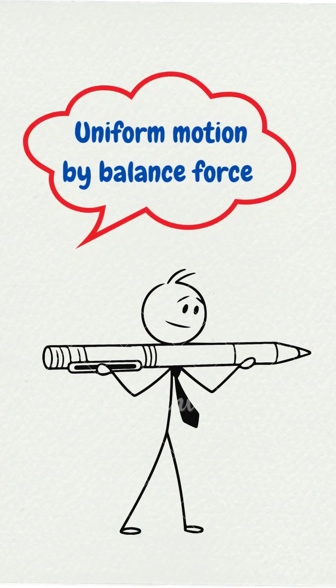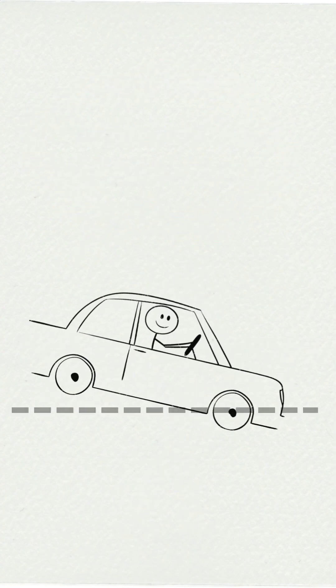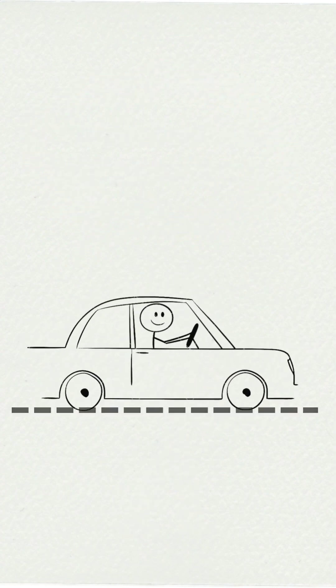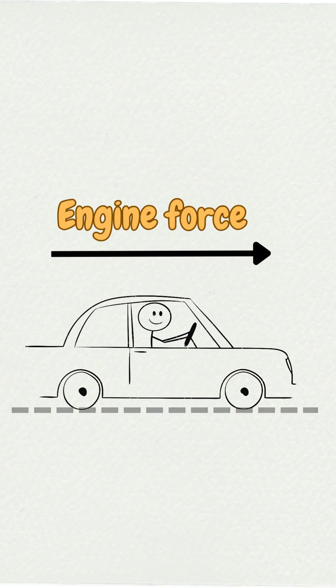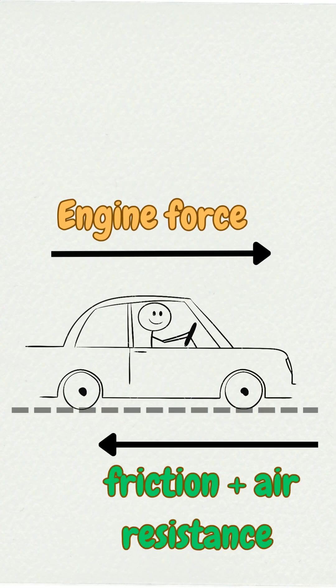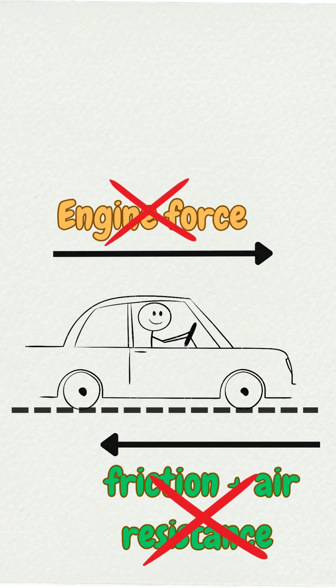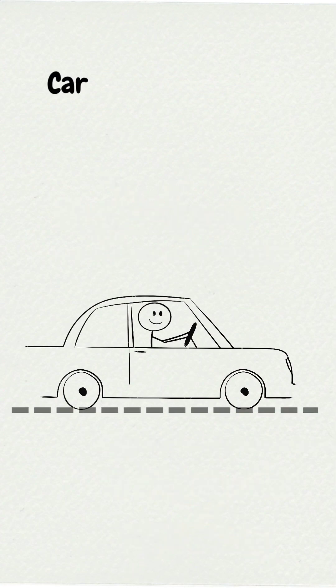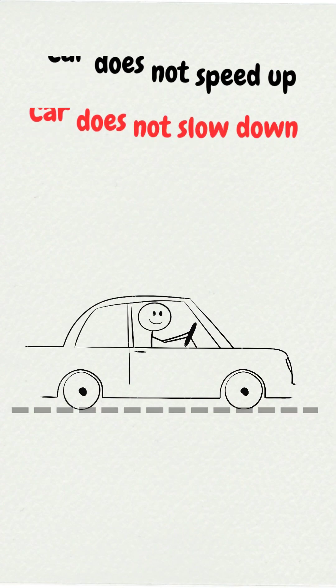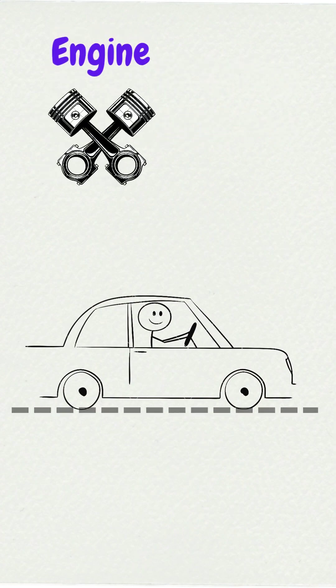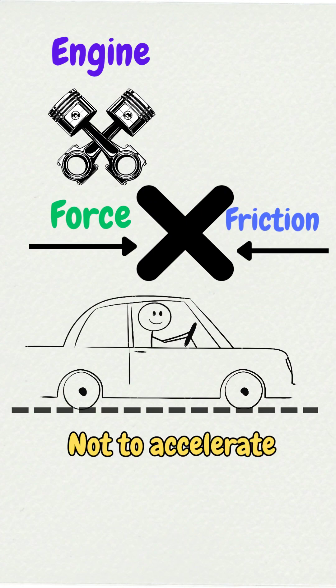Another example of uniform motion by balanced force: a car moving at constant speed on a straight road. Forward force from the engine, backward forces are friction and air resistance. When these two opposite forces become equal, they cancel each other. So the car does not speed up, does not slow down. In this case, the engine only needs to supply enough force to counter friction, not to accelerate.